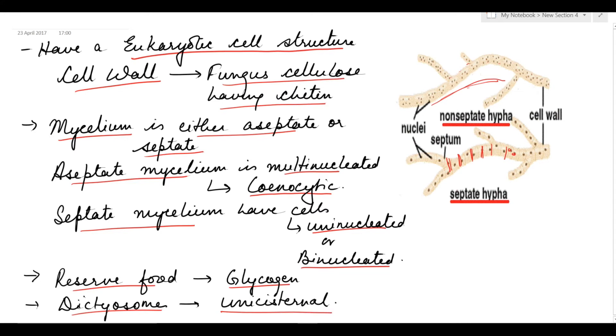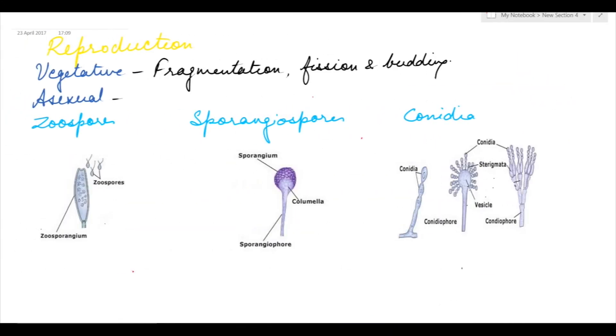Reproduction in fungi: vegetative reproduction is by fragmentation. In yeast, vegetative reproduction is by fission and budding. Asexual reproduction takes place by different kinds of spores.